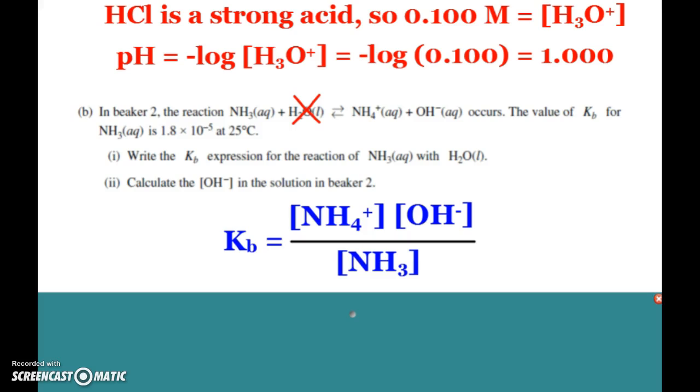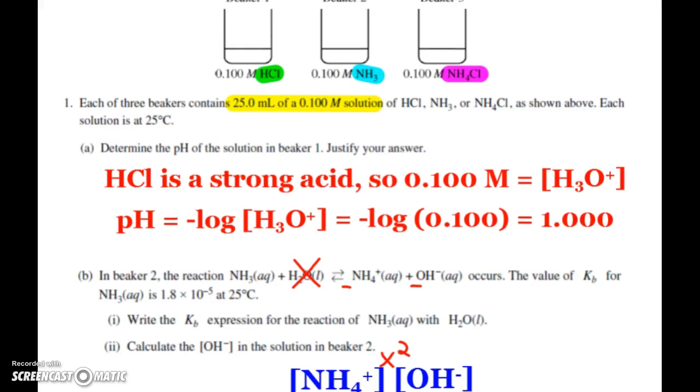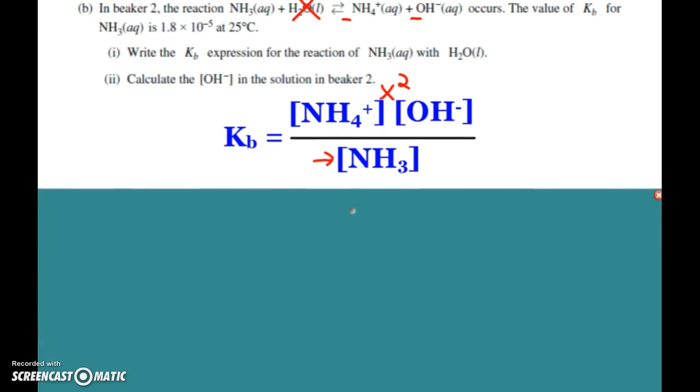You can see here that we have Kb equals products over reactants: ammonium concentration times hydroxide over the ammonia concentration. Remember, Ka and Kb when we're doing these weak acid-weak base problems, you can always pretty much assume that your Ka or Kb equals x squared over the concentration of the acid or base. Here you see Kb equals ammonium times hydroxide, which is x squared because they're in a one-to-one ratio in the equation, over the concentration of the base, which we know is 0.1 molar.